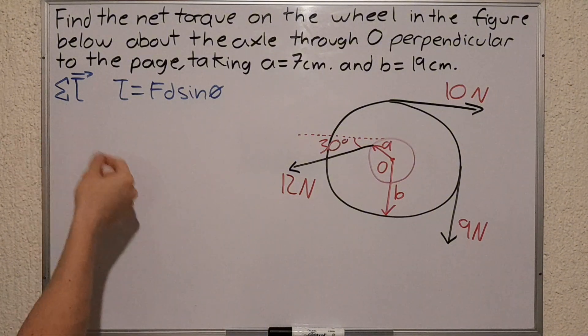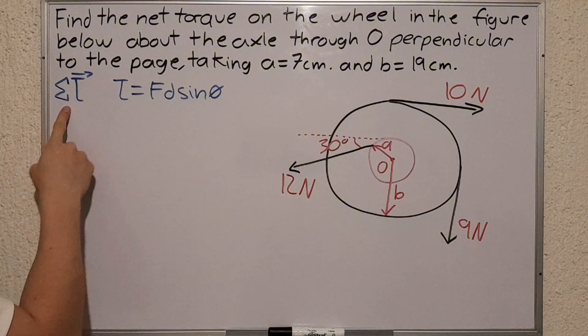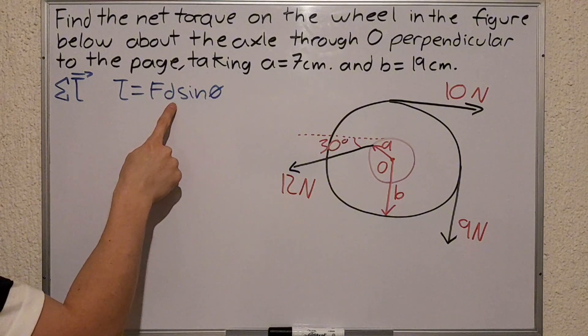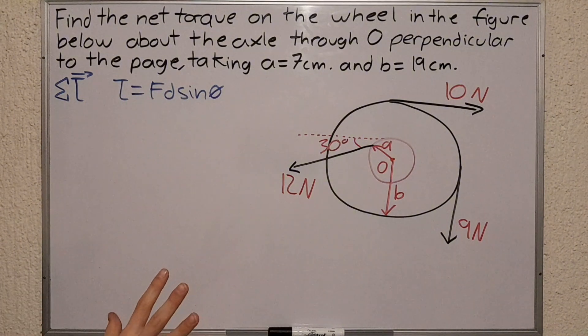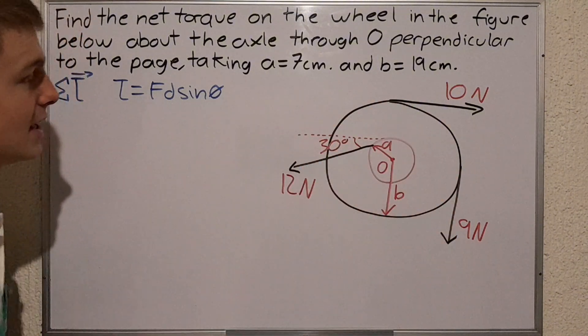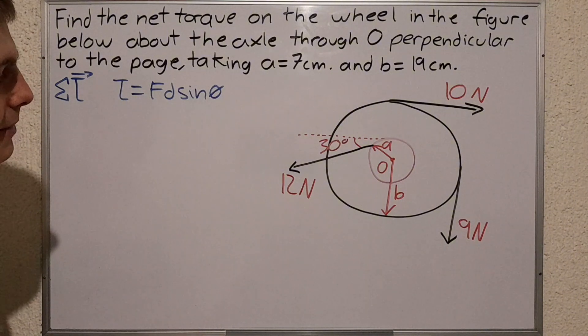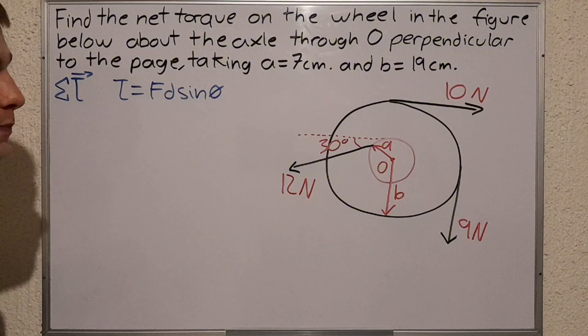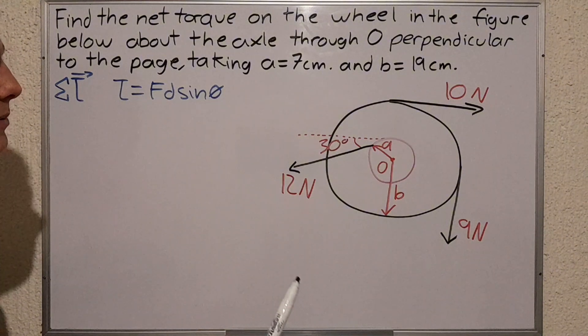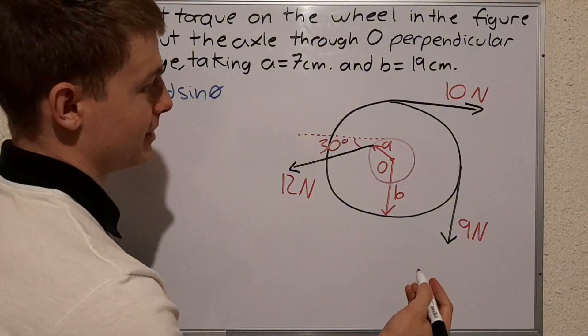Now to do this we must observe some things that will help us solve this problem. We're gonna work with the sum of the torques, and the torque is equal to the force times the distance times sine of the angle. Now we must analyze the figure here, the drawing that I've made, and find out that all the forces are done perpendicular.